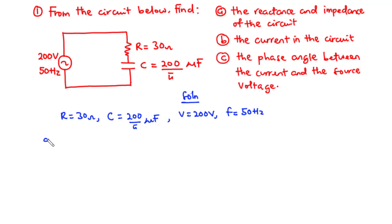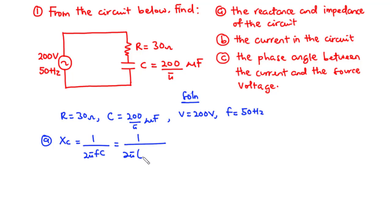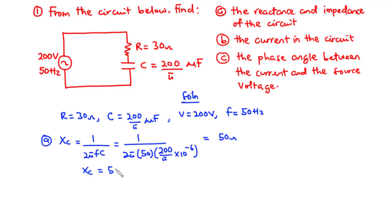We are asked to find the reactance and impedance. Since this is a series RC circuit, the reactance is the capacitive reactance. XC equals 1 over 2πFC, so XC equals 1 divided by 2π times 50 times 200/π times 10 to the negative 6. This gives XC equals 50 ohms.